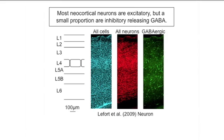GABAergic neurons form a sparse population of neocortical neurons, and in order to visualize them, we need to have them specifically labeled. Here you can see a brain slice where we've labeled all the cells with DAPI — that's the blue color. In red, you see all the neurons labeled with NuN, and in green, you see the GFP-labeled neurons which are GABAergic, in a mouse developed by Tamamaki et al. in 2003, where they knock in GFP into the GAD67 gene locus.